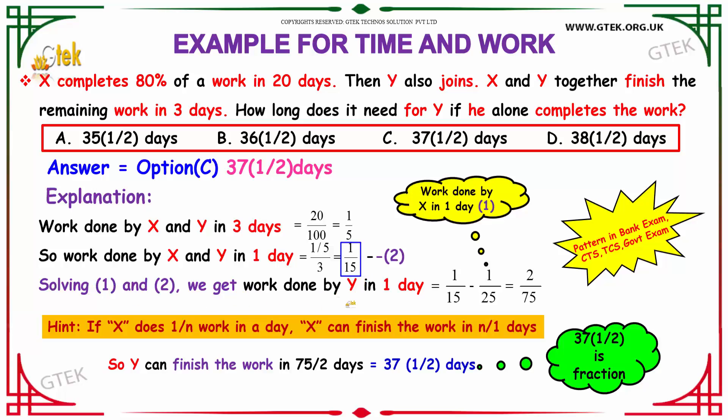Solving 1 and 2, we get the work done by Y in 1 day to be 1 by 15 minus 1 by 25. We know that the work done by X in 1 day is 1 by 25 from our first conclusion. So, finding the difference we get the work done by Y in 1 day to be 2 by 75. We know that if X does 1 by n work in a day then X can finish the work in n days. So, if Y's 1 day work is 2 by 75 then Y can finish the work alone in 75 by 2 days.